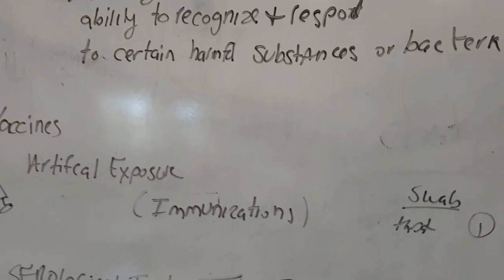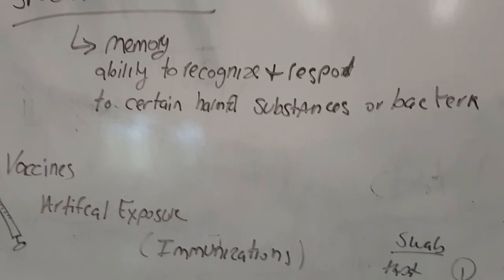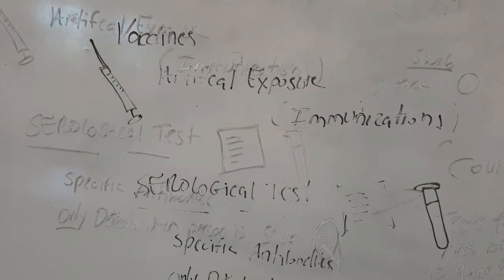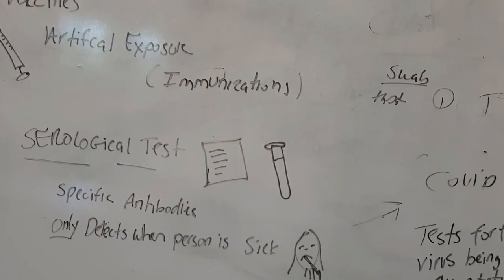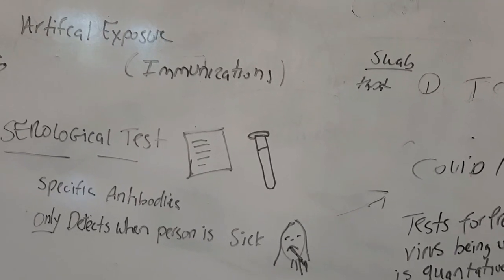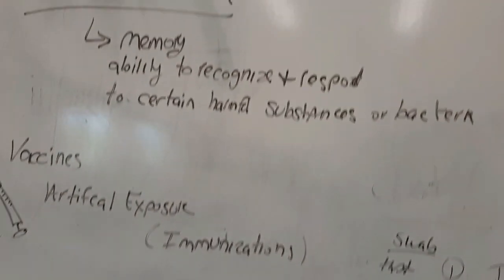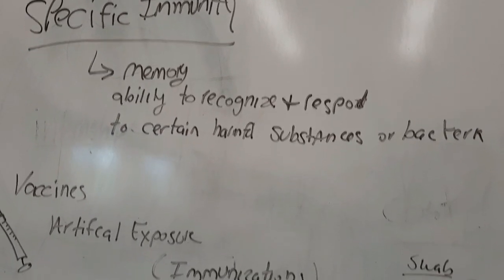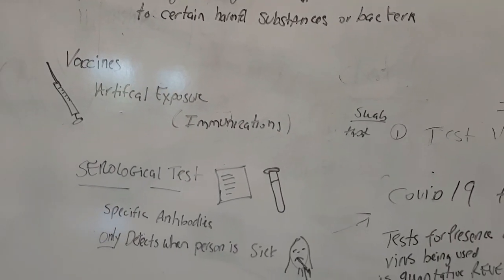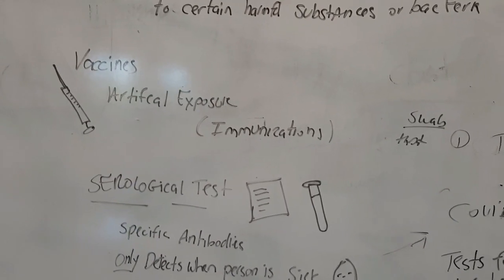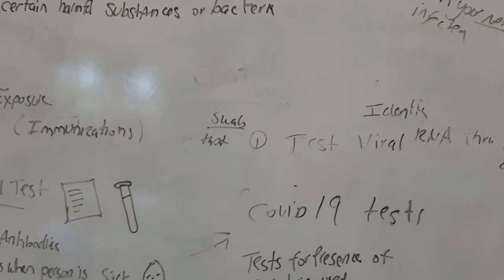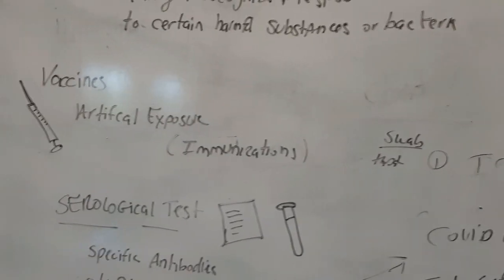What I really want you to understand is that there are two different types of immunities. Now, where testing comes in — we want to test for the presence of the virus. What we do is look at our immune system and the RNA, the DNA, and whether there's presence of antibodies. Right now with COVID-19, there are a couple of tests that they are doing.